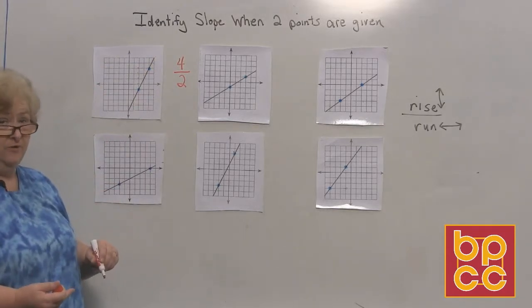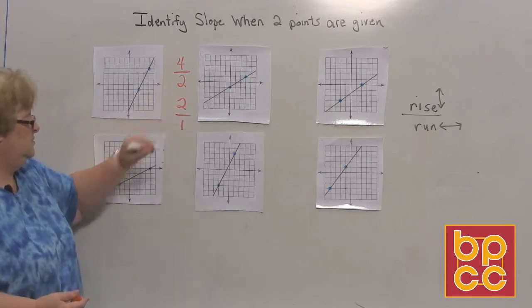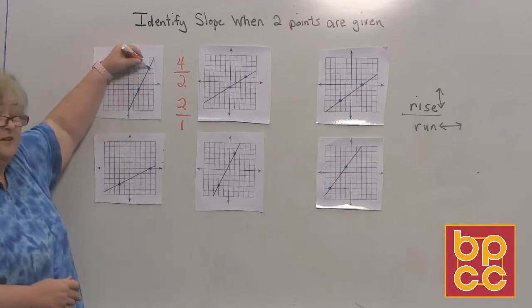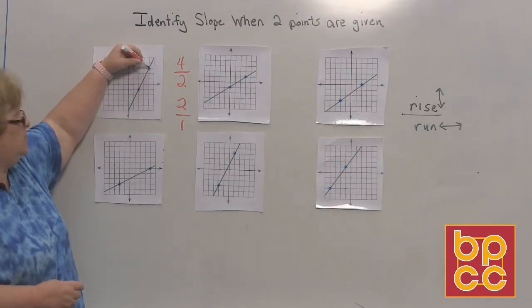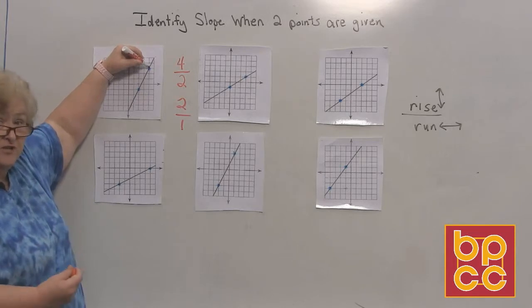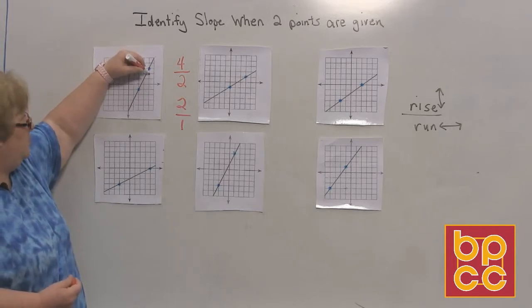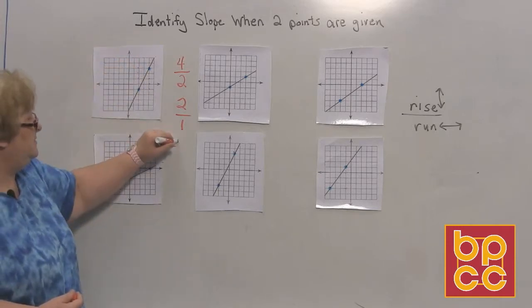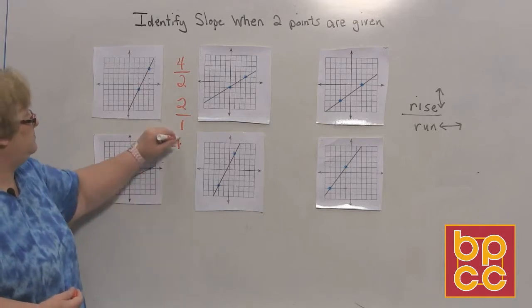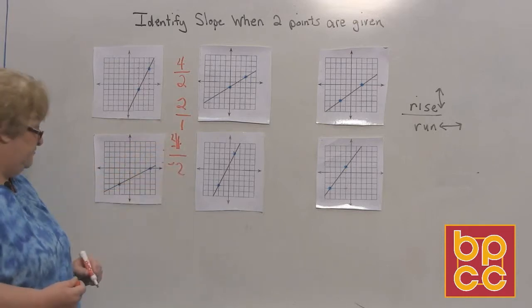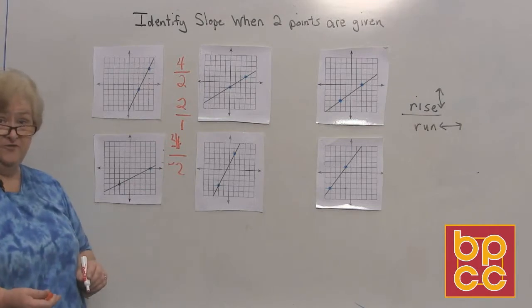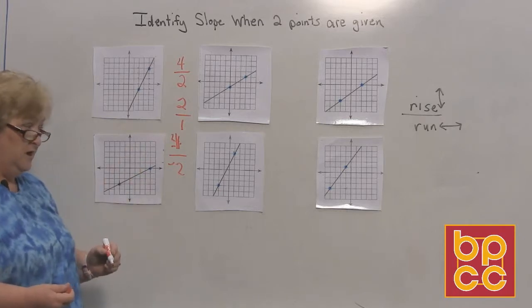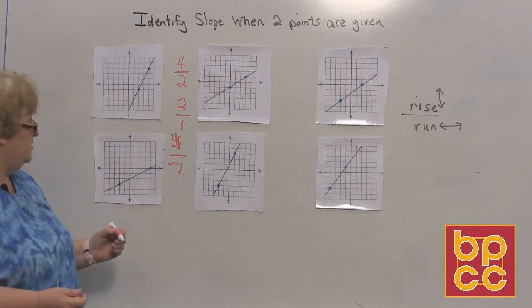It can also be reduced to 2 over 1, but it can also be something else. Let's say that I decided that I wanted to start with this upper right dot. This time I'm going to go down first because that's my rise. I'm going to go 1, 2, 3, 4 and move over 2 to the left. So I went down 4 and to the left 2. Well a negative 4 over a negative 2 is the same as 4 over 2 which is the same as 2 over 1. So any of those would be a perfectly good answer.